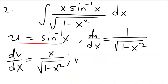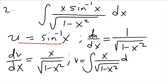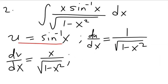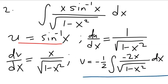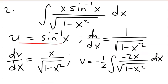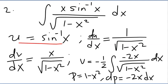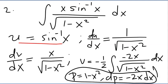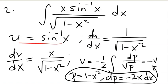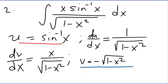To find v, we integrate dv/dx = x/√(1−x²). We rewrite it so the numerator is related to the derivative of the argument inside the square root. Substituting p = 1−x², we get dp = −2x dx. Substituting into the integral gives −(1/2)∫p^(−1/2) dp = √p, and since p = 1−x², v = −√(1−x²).